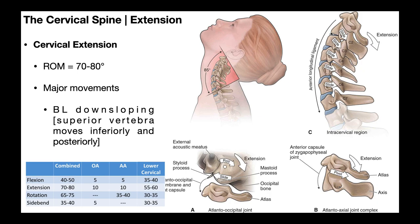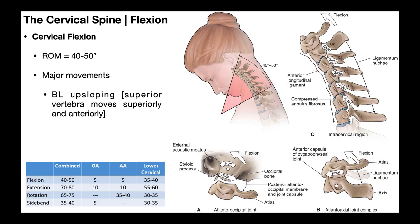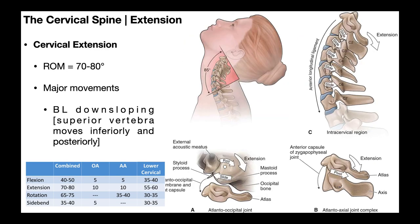Notice that in extension, the anterior regions of the disc are no longer compressed. The posterior regions are not really that compressed either — it's really that we see the anterior part of the disc compressed during flexion, not extension. As mentioned, we have bilateral downsloping.